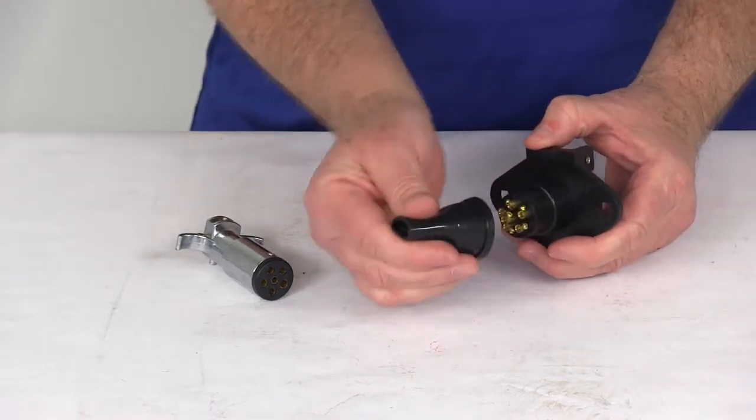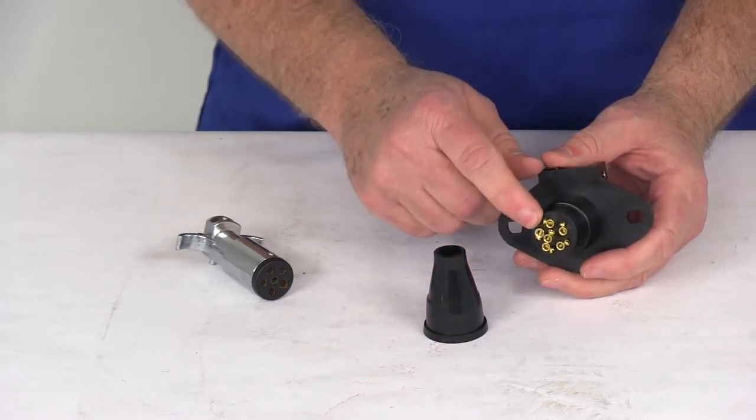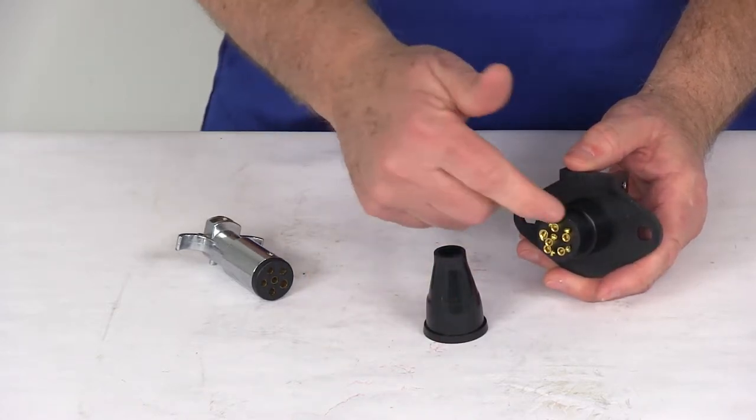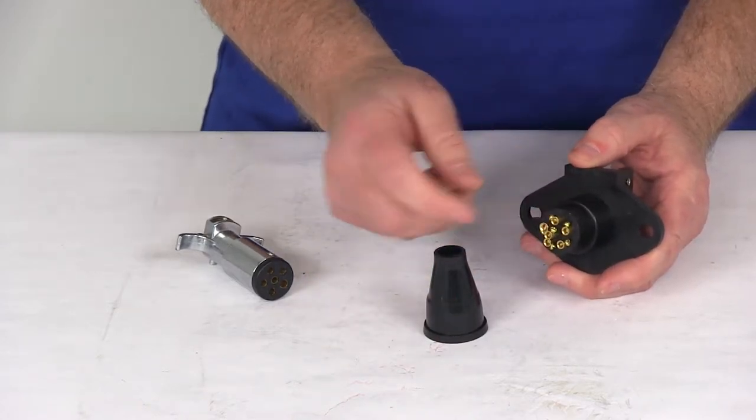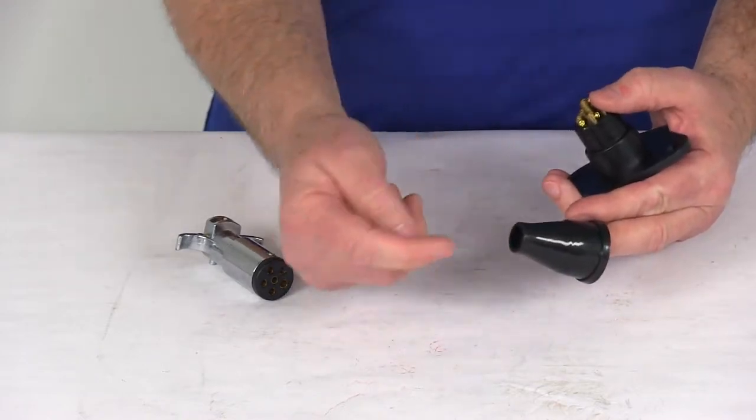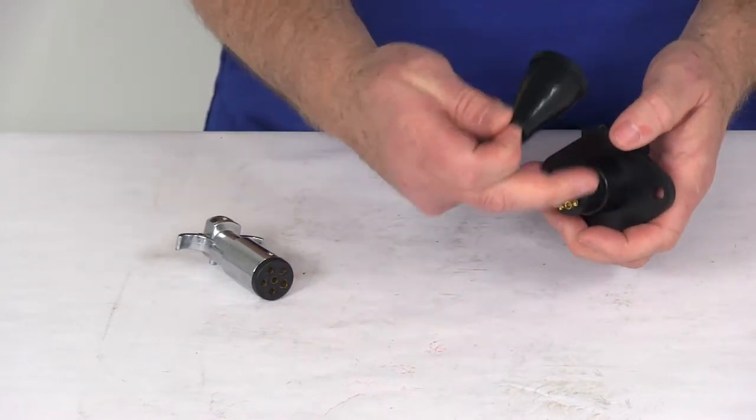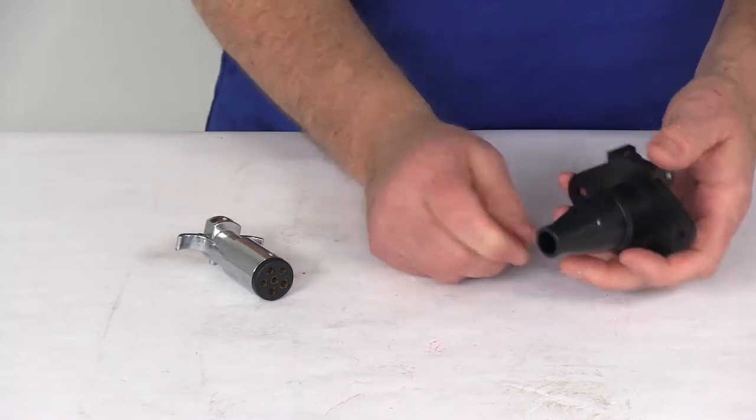Also on the back, you'll notice you can pop off this rubber boot and it gives you where your connection points are. So you just wire to these connection points. Actually, first you've got to run your wire through here, bring it out, make your connections and then just slide this up and that will cover it.